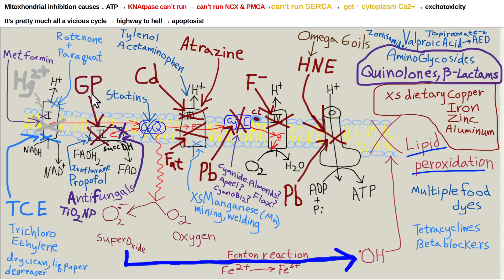Glyphosate is spread on soy. All these people think soy is good for them — here's just one more problem to add to its truckload of problems: glyphosate inhibits complex 2 of mitochondrial electron transport. So if you're eating non-organic processed food made with GMO corn sprayed with atrazine and GMO soy with glyphosate, that's two mitochondrial inhibitors right there.